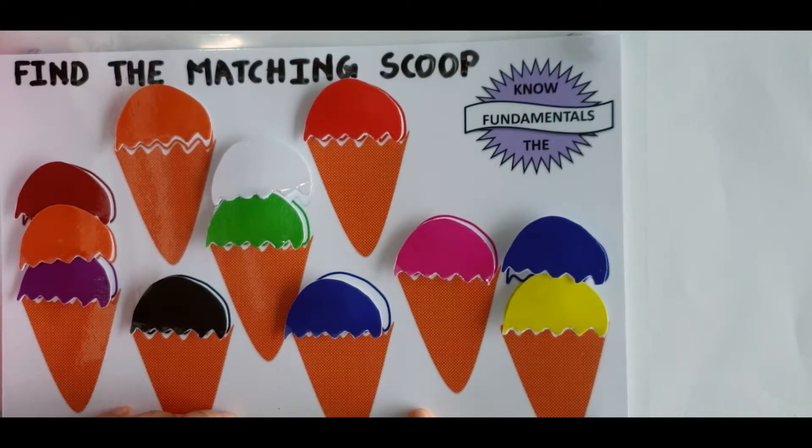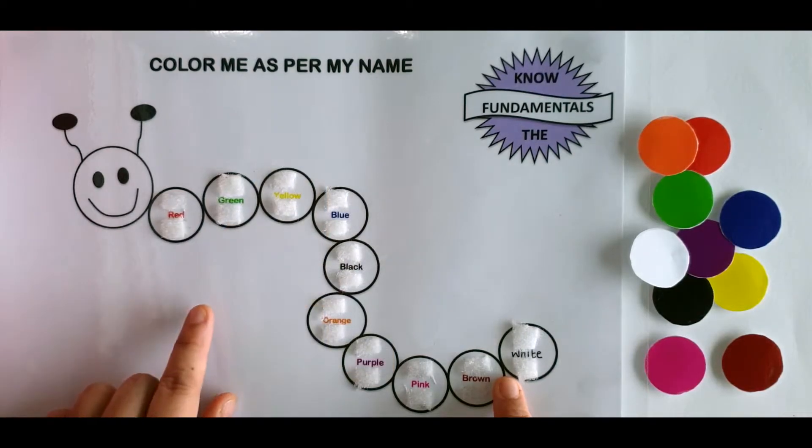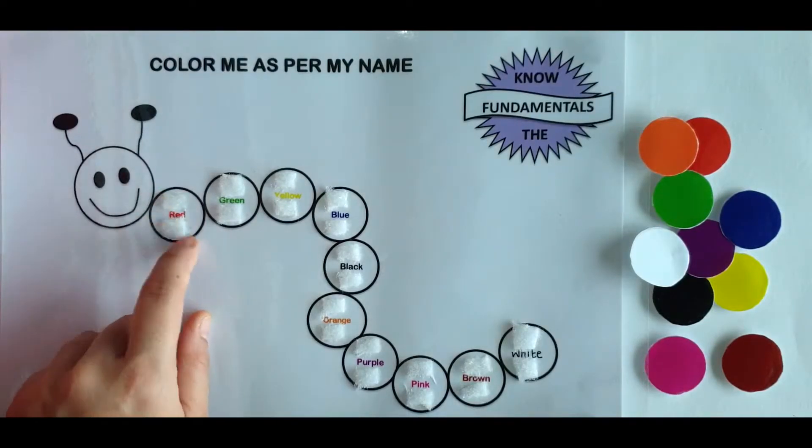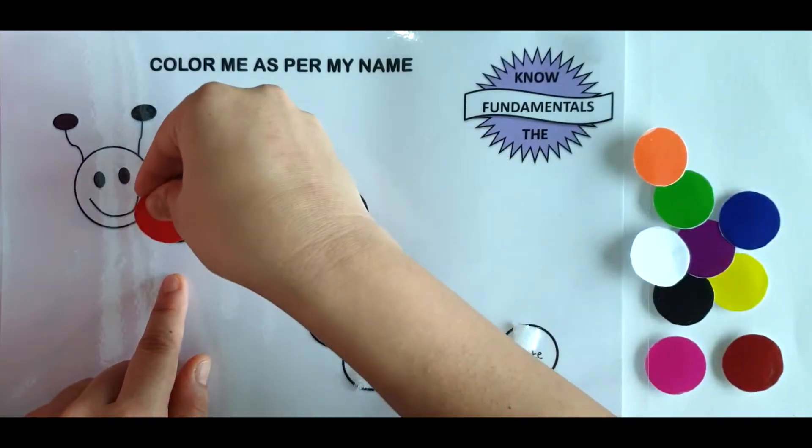Now let's see activity number four. So this is activity number four called color me as per my name. So in this activity, we ask kids to read the color and they match the color accordingly. So here it's red. So let's take red.